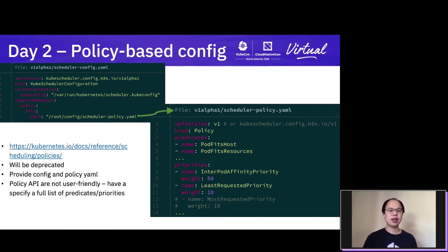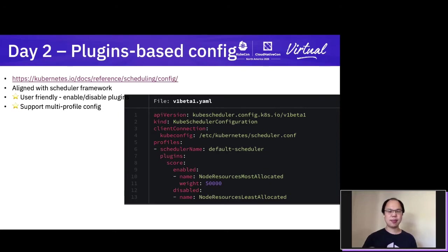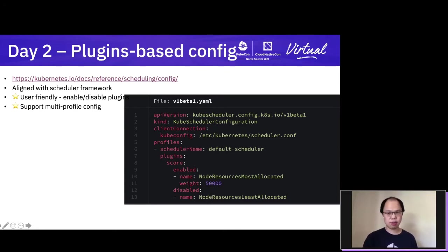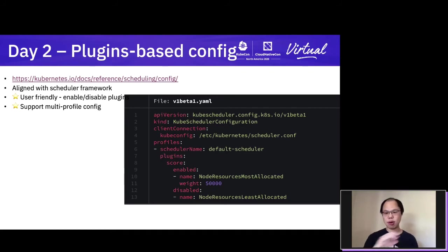As time goes, we want to deprecate this kind of policy-based config. Instead, we are transitioning to a plugin-based config. A plugin is simply a functional unit written to satisfy one specific constraint, either from the user's input or from some implicit general policy. If you're using v1alpha2 or v1beta1, you can use the latest KubeSchedulerConfiguration under the profiles subfield. There is a plugins field so that you can enable or disable plugins by writing the minimum YAML snippet possible. It's very user-friendly.